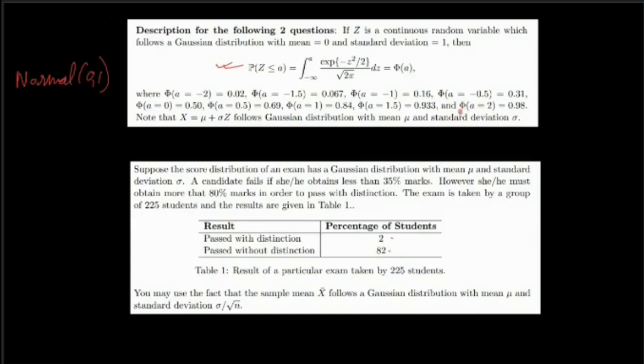The premise of this question is that there's an exam where marks follow a normal distribution with mean μ and standard deviation σ. A candidate fails if they obtain less than 35% marks and passes with distinction if they get more than 80% marks. We're provided a table showing that 2% of students passed with distinction and 82% passed without distinction.